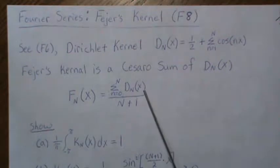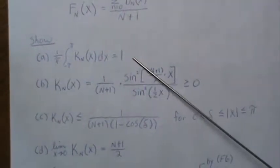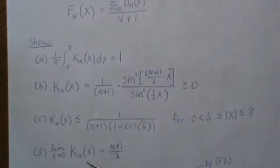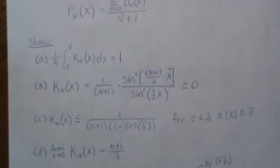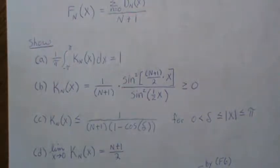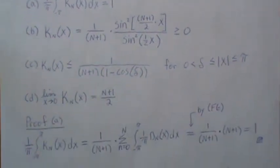Fejér's kernel is defined as a Cesàro sum of Dirichlet kernels: there are n plus one of these Dirichlet kernels starting from zero to n, and then we divide by n plus one. In this video we're going to show four properties: that it integrates to one, that it's positive, that it's bounded by a certain expression, and that the limit as x goes to zero is n plus one.